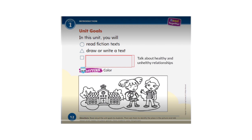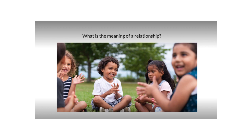Our goals for this unit are: read fiction texts, draw or write a text, and talk about healthy and unhealthy relationships. We will start the unit by asking ourselves: what is the meaning of relationship? Look at this picture — look at these kids. Can you see them? Can you think of a relationship that joins them together?